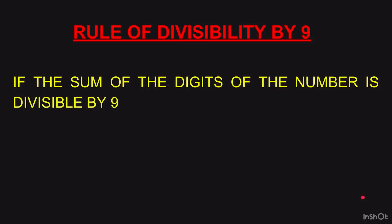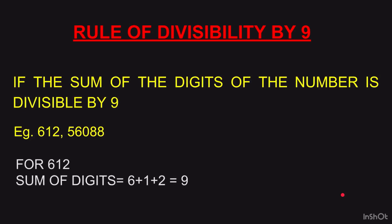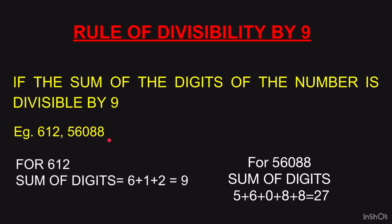Rule of divisibility by 9: this is very similar to the rule for 3. If the sum of digits of the number is divisible by 9, the number is divisible by 9. Example: 612 — 6 plus 1 plus 2 equals 9, and 9 is divisible by 9, so 612 is divisible by 9. Second example: 56088 — 5 plus 6 plus 0 plus 8 plus 8 equals 27. We know 27 is divisible by 9 (9 threes are 27). If in doubt, add again: 2 plus 7 equals 9. So 56088 is also divisible by 9.